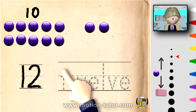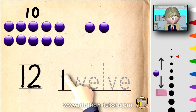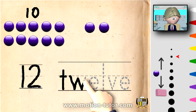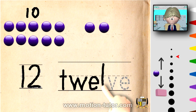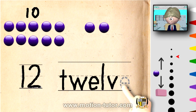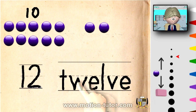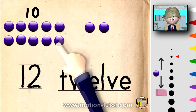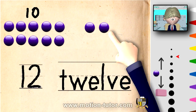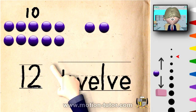And you spell 12: T, W, E, L, V, E. So, 10 and 2 more is 12.